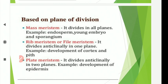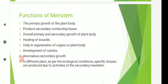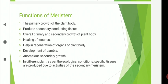This concludes the classification of meristem based on origin, plane of division, and position. Now let's see the functions of meristem. Meristem plays different kinds of functions. First, the primary growth of the plant body occurs due to activity of primary meristem. Secondary meristem produces secondary conducting tissue to fulfill the requirement of additional conduction of water and food. Thirdly, embryonic meristem is responsible for formation and differentiation of different parts of the plant body. Overall primary and secondary growth of the plant body is possible due to activities of meristem.